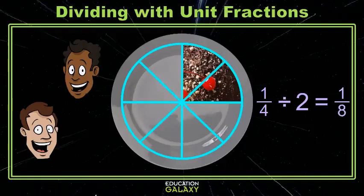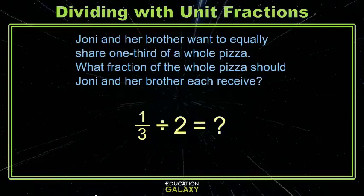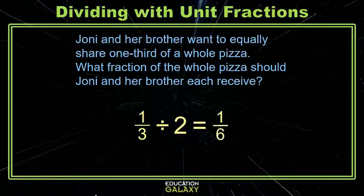Let's try one more. We have Joni and her brother, and they're going to share one-third of a whole pizza. We want to know what fraction of the whole pizza each friend gets. We're doing the problem one-third divided by two. As you might remember from the last ones, our answer has been a unit fraction where the denominator is a product of the whole number and the denominator of the original unit fraction. In this case, that's going to be one-sixth.